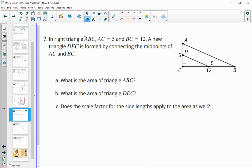Number 7. In this right triangle, we see that AC is 5 and BC is 12. And then a new triangle is formed by connecting the midpoints. Let's figure out the area of triangle ABC. So ABC is this larger triangle. To figure out the area, we do base times height divided by 2. So we'll do 5 times 12 divided by 2. 5 times 12 is 60, divided by 2 is 30 units squared.